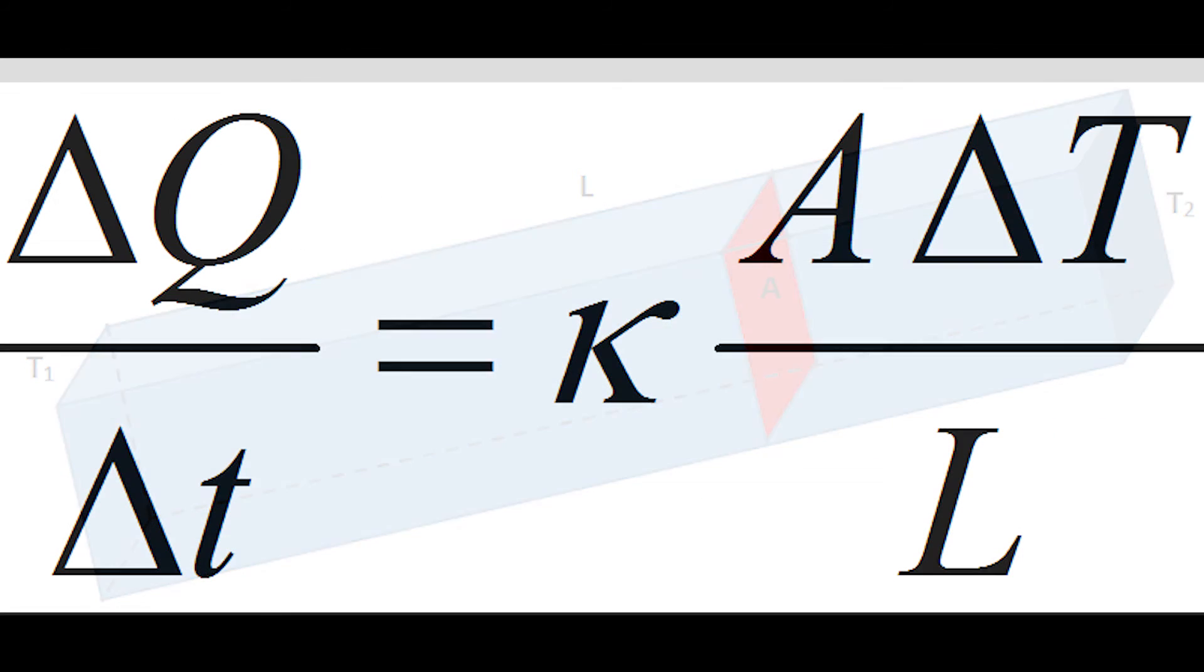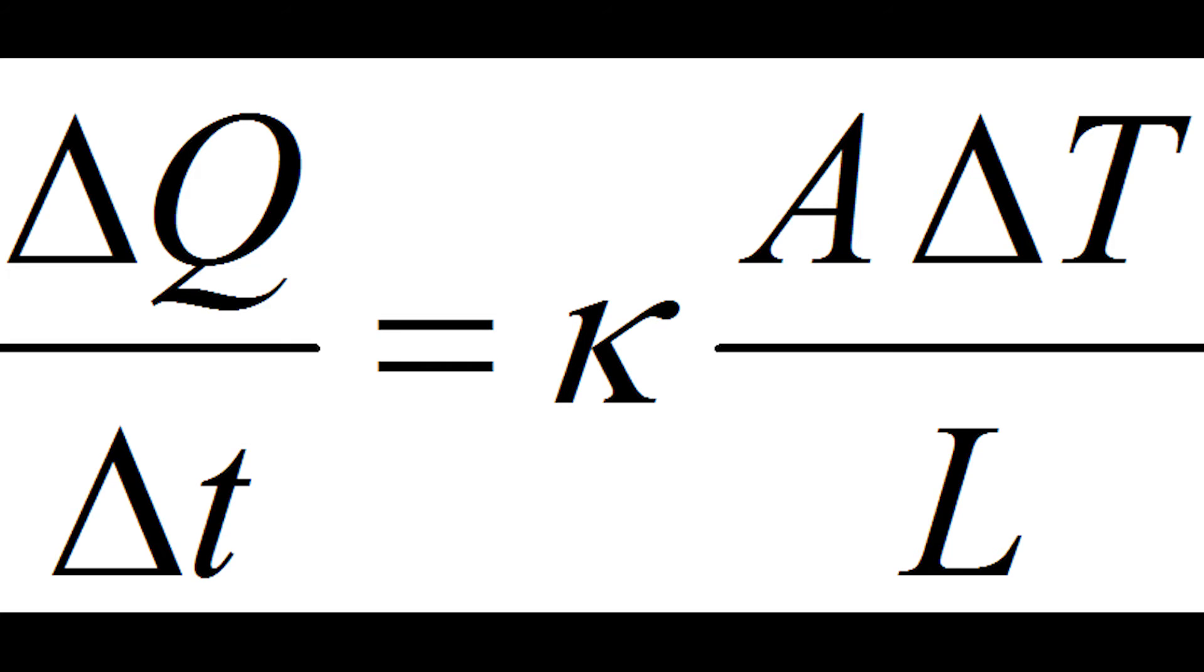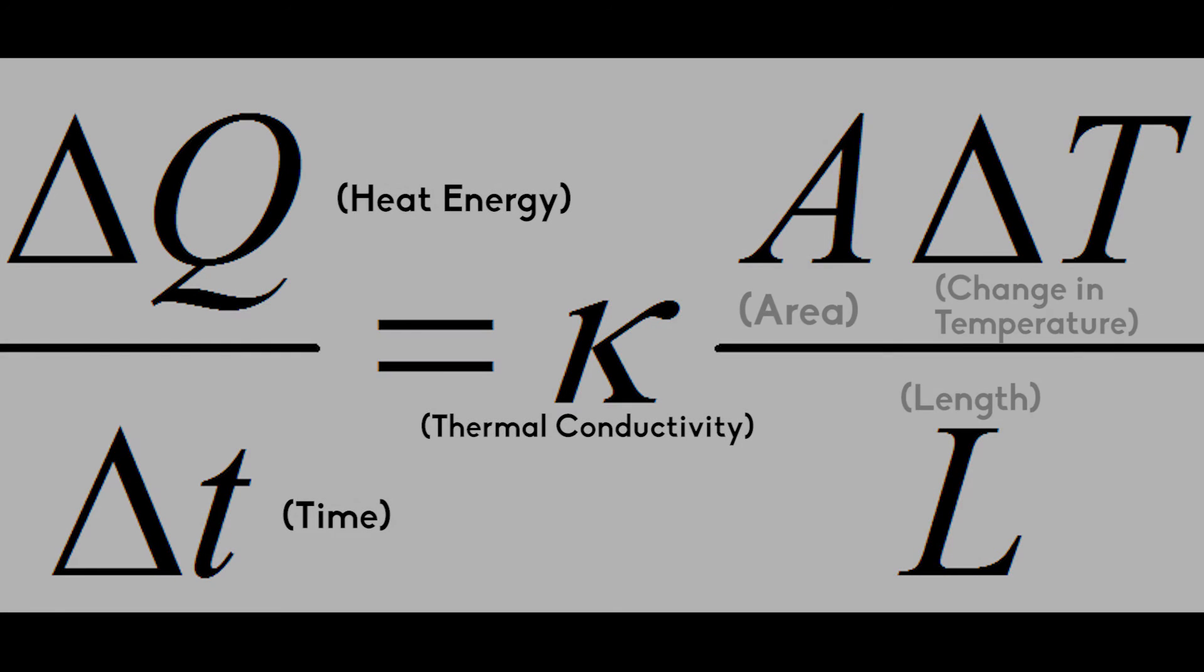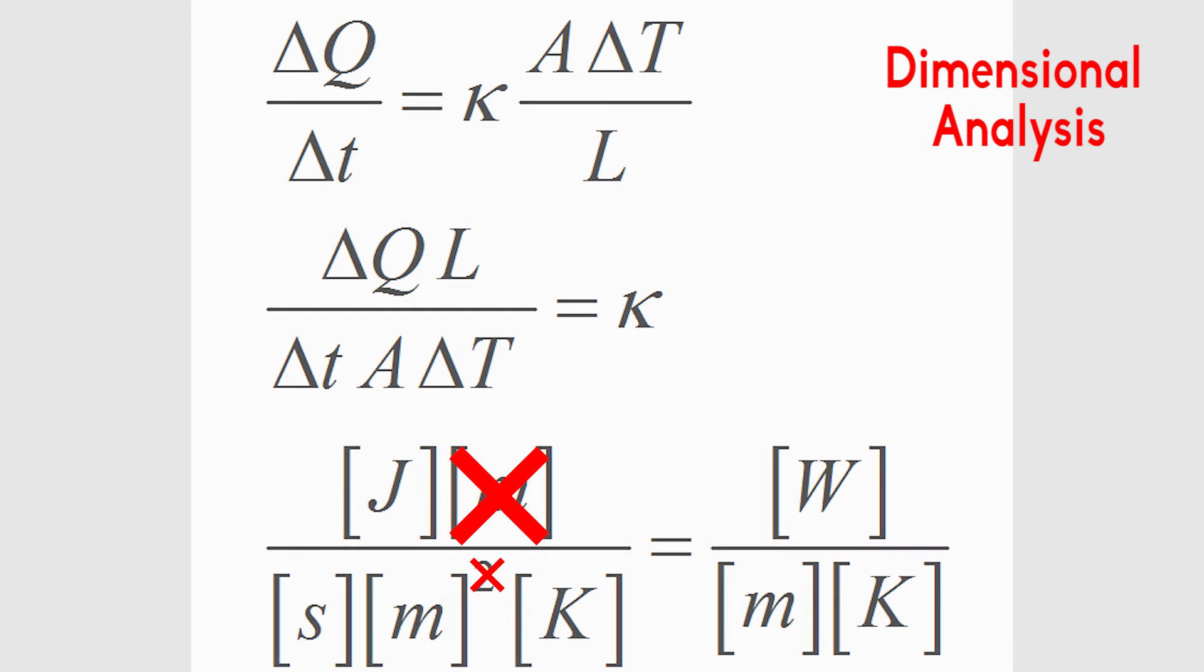The complete equation that relates these variables is shown, where the heat flow delta Q over time delta T is equal to the thermal conductivity times the cross-sectional area A times the temperature difference delta T divided by the length L. We can solve for kappa to easily identify its units as watts per meter degree Kelvin, as one of the meters in area cancels with the meter in length.